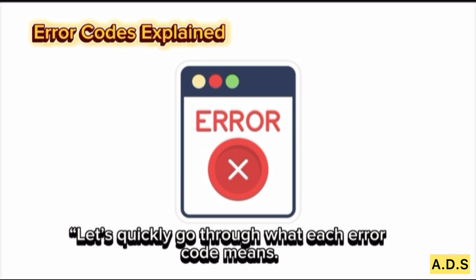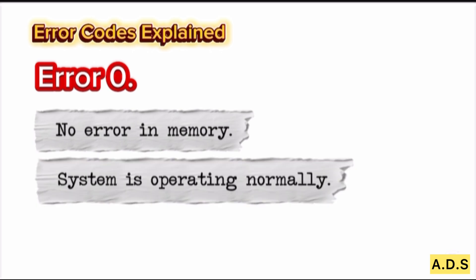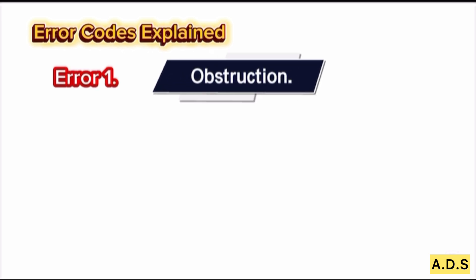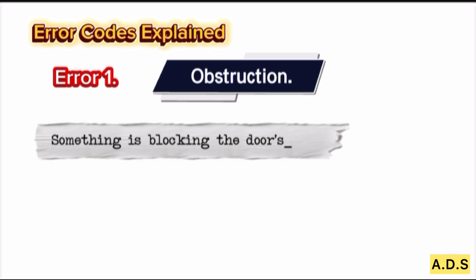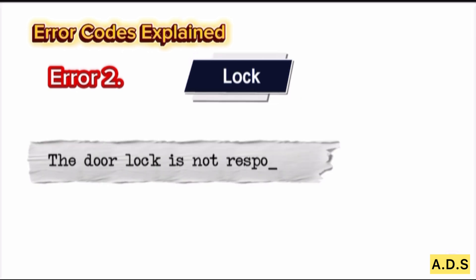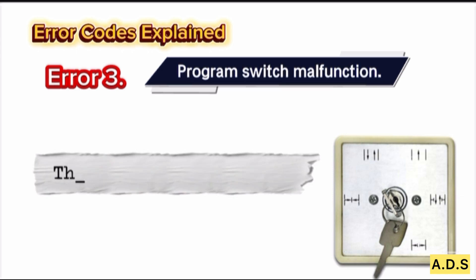Error Codes Explained. Let's quickly go through what each error code means. Error 0: No error in memory — system is operating normally. Error 1: Obstruction — something is blocking the door's path. Error 2: Lock error — the door lock is not responding.